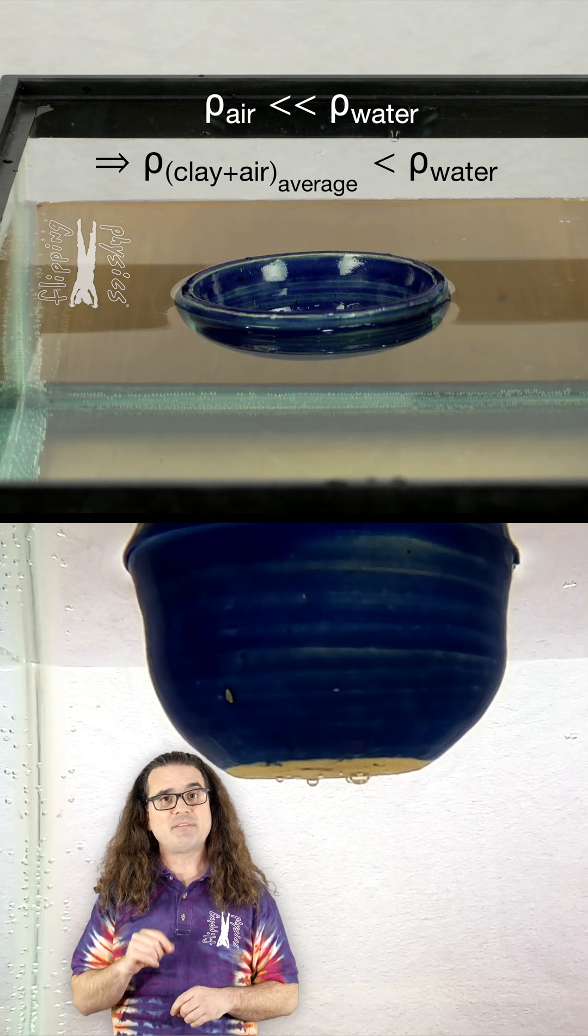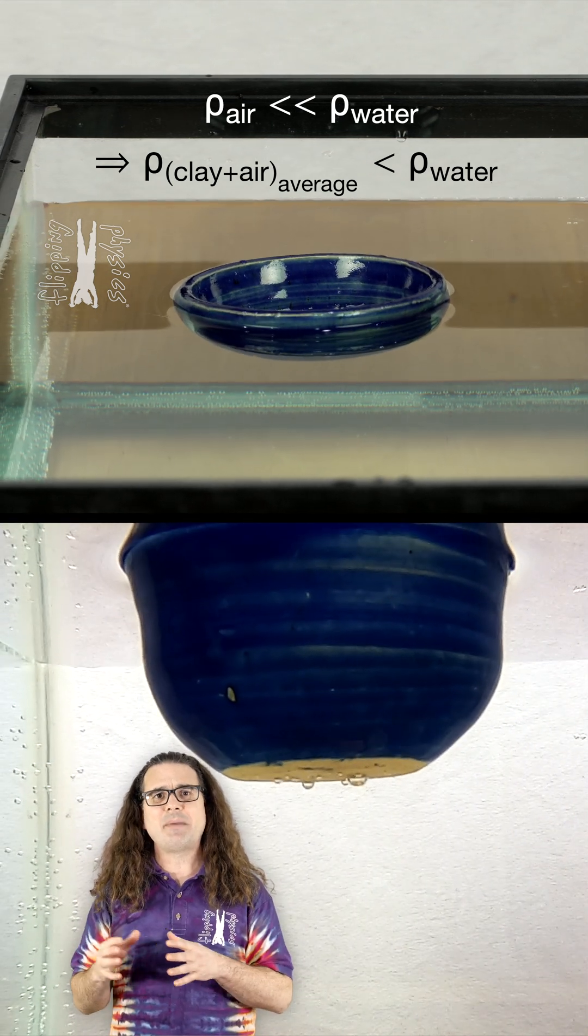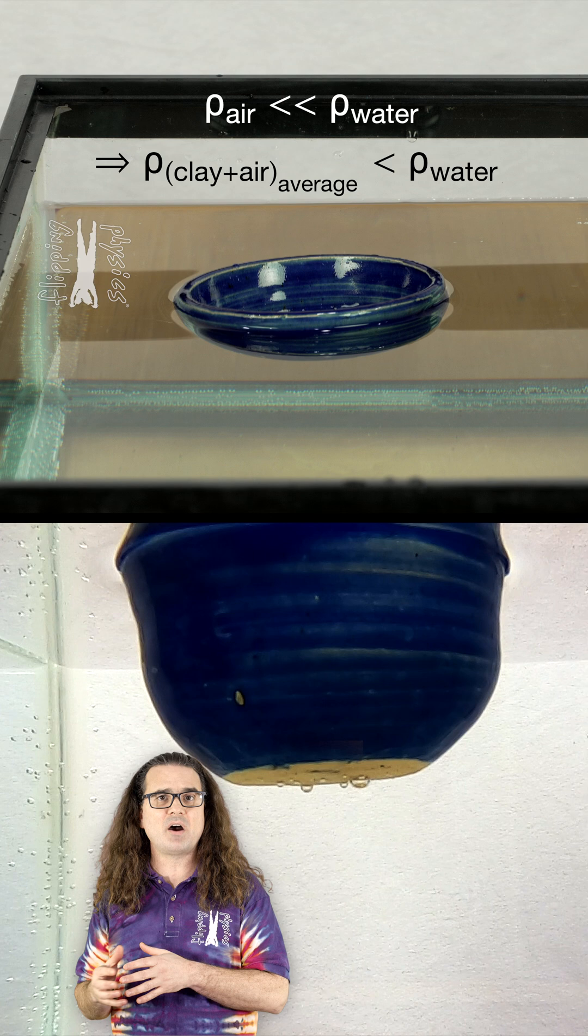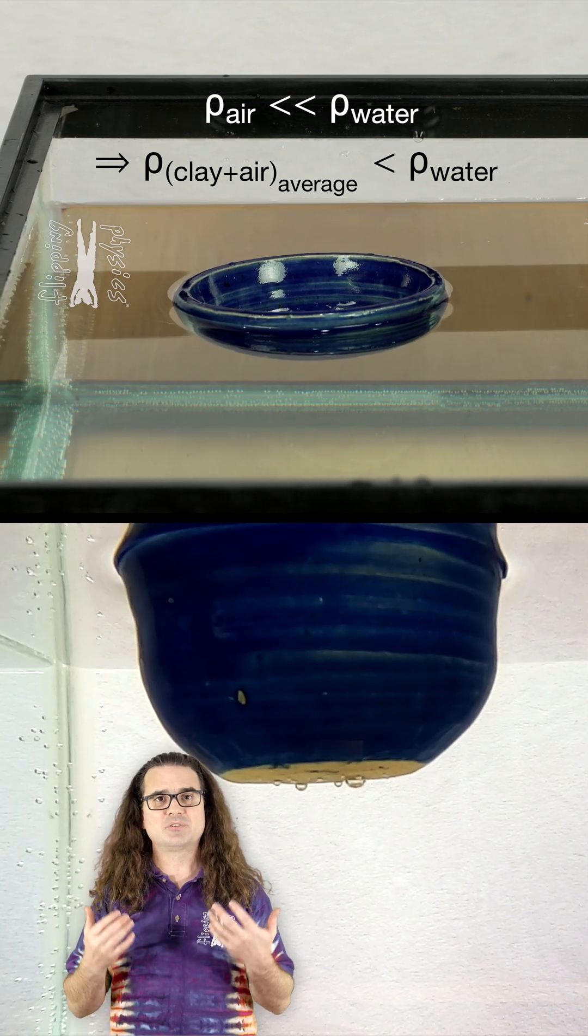Again, the air inside the hull of a boat has such a low density that it makes the average density of a boat lower than the density of water, which makes it possible for steel boats to float on water.